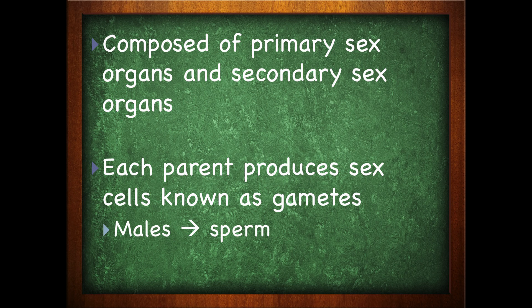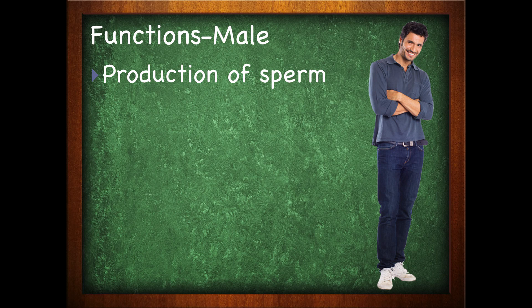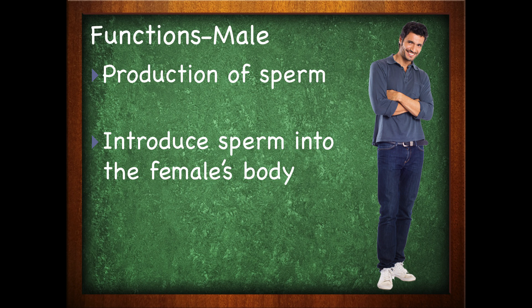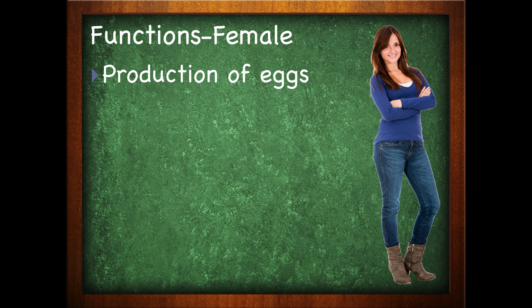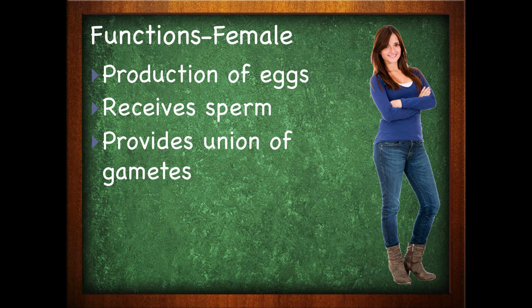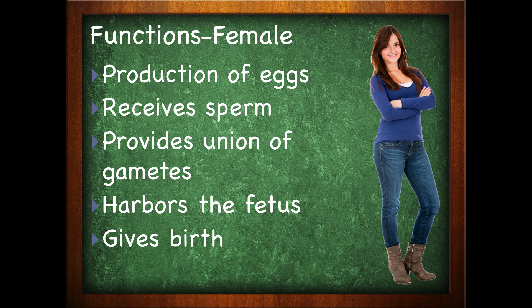In males, the gamete is known as sperm. In females, the gamete is known as eggs. The gametes will combine to form the zygote — the new organism, the new life form. The male's function in the reproductive system is the production of sperm, as well as the introduction of that sperm into the female's body. The female's reproductive system's job is to produce the eggs, to receive the sperm, to provide the union of the gametes — the area where egg and sperm come together — to harbor the fetus, provide a safe place for the fetus to grow and develop, and the female is responsible for giving birth.